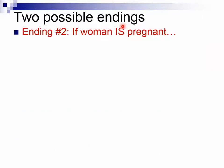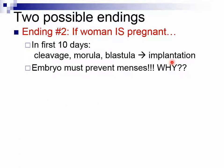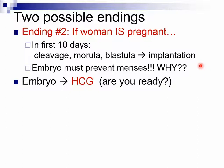Our two second possible endings: if a woman is pregnant, in the first ten days after fertilization the embryo goes through the stages we just described — cleavage, which is rapid mitosis without cell growth, morula, blastula, and implantation. The embryo must prevent menses, because if the woman has her menstrual flow, it's bye-bye embryo. So the embryo must take complete hormonal control of the woman's body. If you look at a period at the end of a sentence on your lecture guide, that is how big the blastocyst is — literally, that dot is the hundred-cell stage of the human embryo.